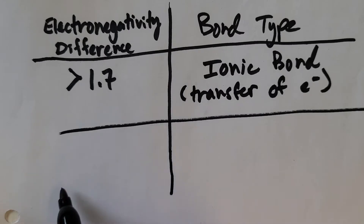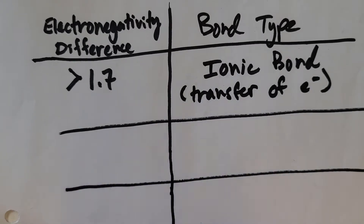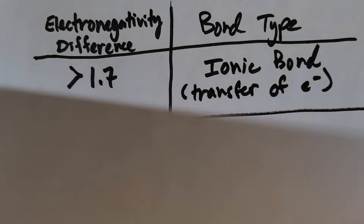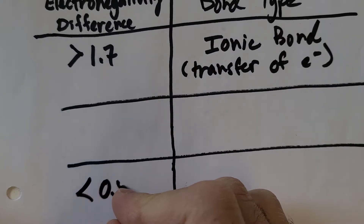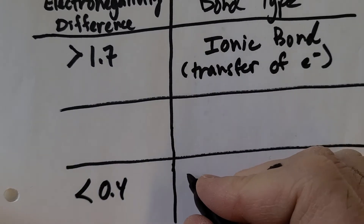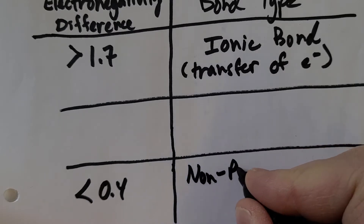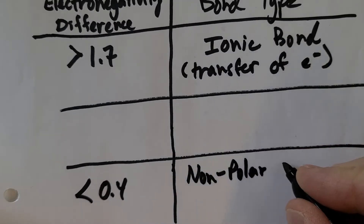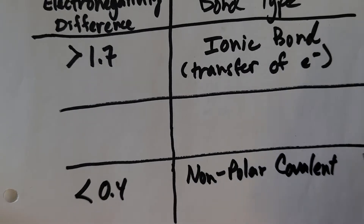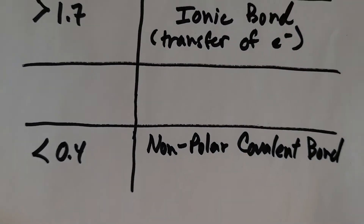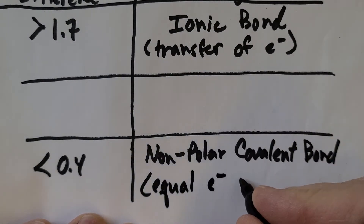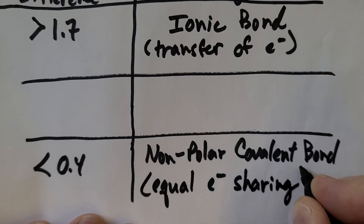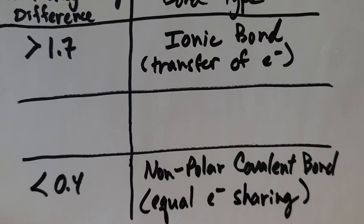We have two more scenarios. If the electronegativity difference is less than 0.4, it is a non-polar covalent bond. That means equal electron sharing — the electrons are shared equally between the atoms.